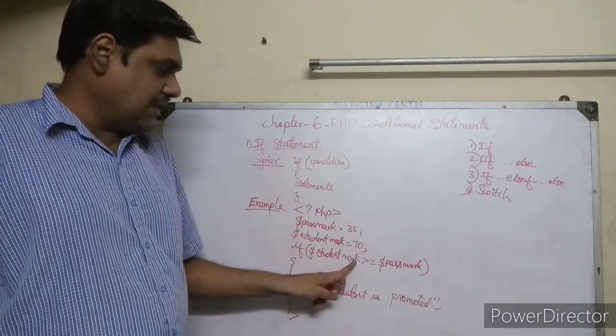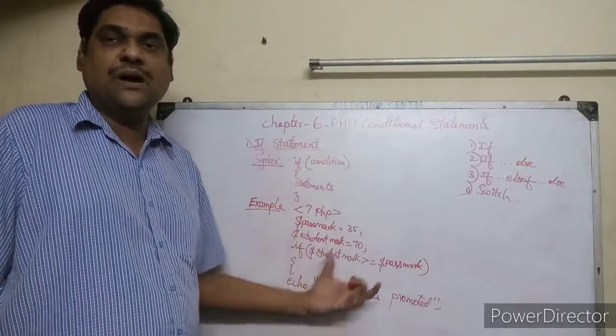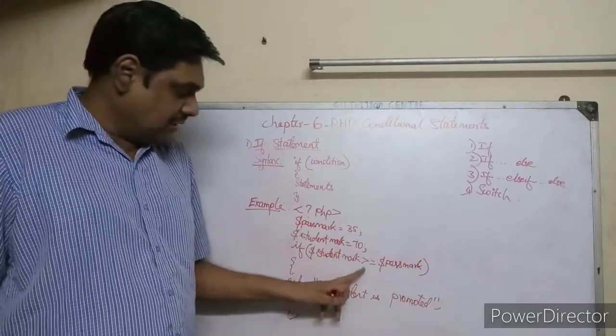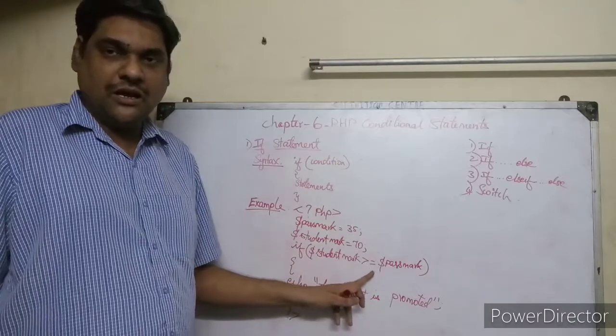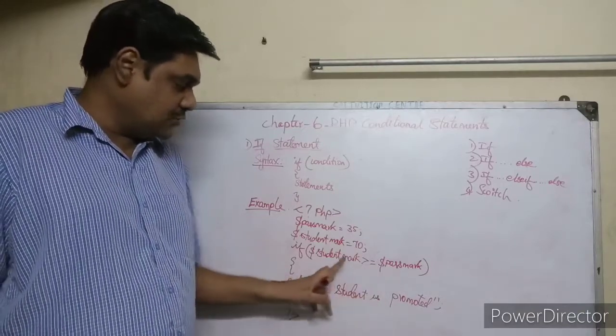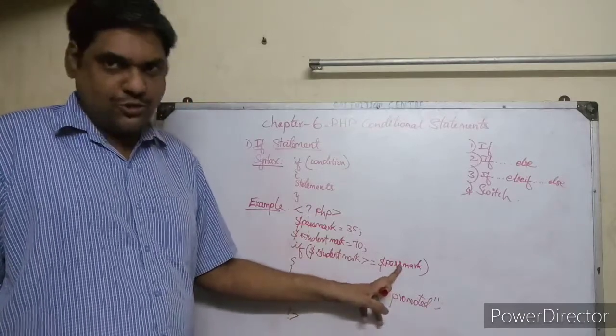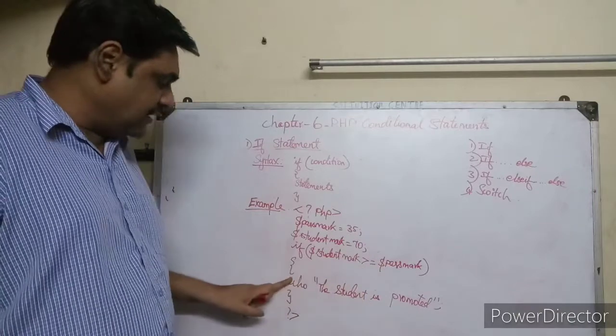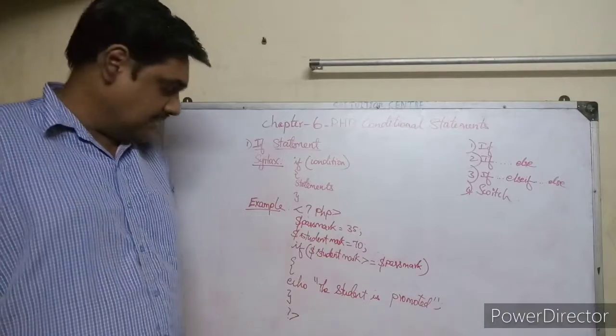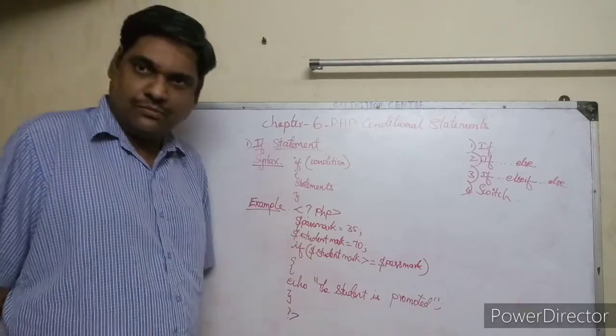If dollar student_mark is greater than or equal to dollar pass_mark, we check this condition using the relational operator. Student mark is 70, pass mark is 35 - is 70 greater than or equal to 35? True. So it will print 'The student is promoted'.